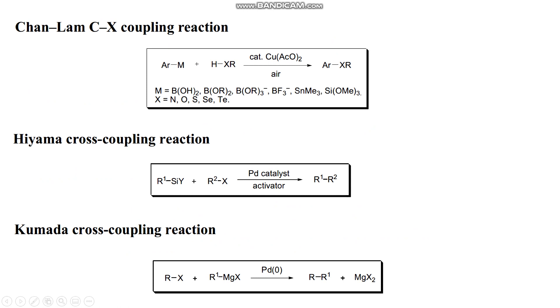Kumada cross-coupling reaction is also a palladium cross-coupling of an organomagnesium compound with organic halides to form this type of product.